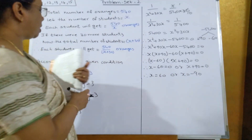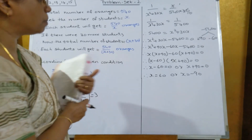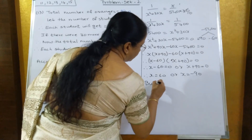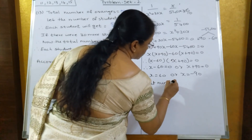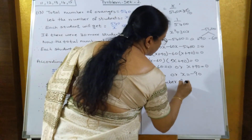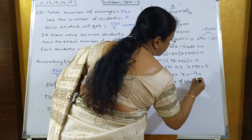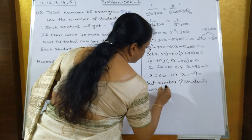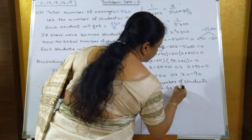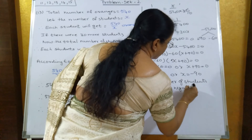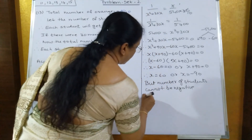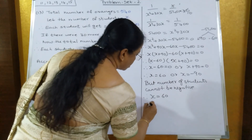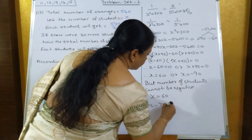Now we need to find the number of students. Since the number of students cannot be negative, x equals 60. Therefore the total number of students is 60.